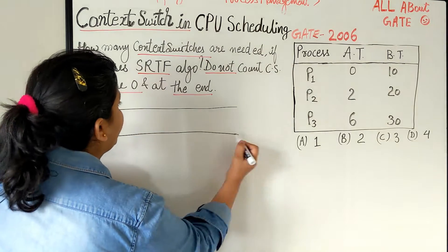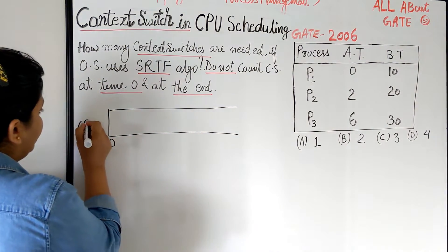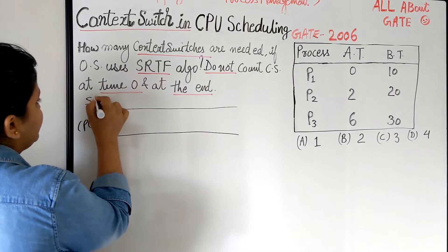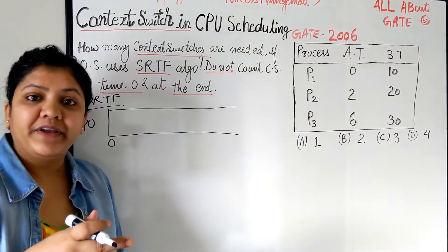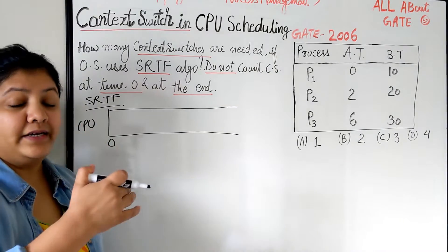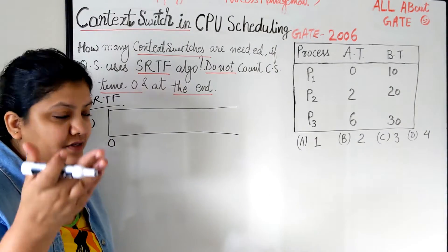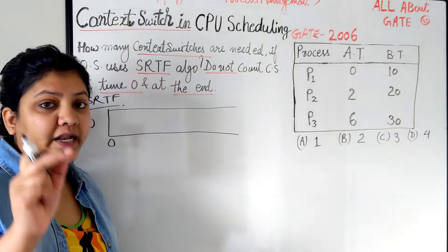Here I'm making the Gantt chart over time 0 for the CPU. The algorithm is SRTF as given in the question. And I hope you all remember, we have done a lot of questions about SRTF. You can go in the playlist and check it out if you don't know the algorithm yet.